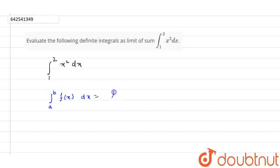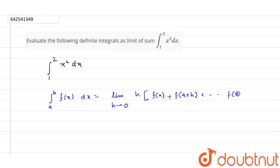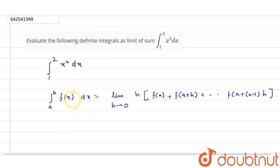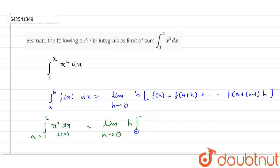The definite integral ∫ dx is equal to the limit as h tends to 0 of h times [f(a) + f(a+h) + ... + f(a+(n-1)h)]. Here f(a) equals x², so a equals 1 and f(x) equals x². This becomes limit h tends to 0 of h times [a² + (a+h)² + ... + (a+(n-1)h)²].